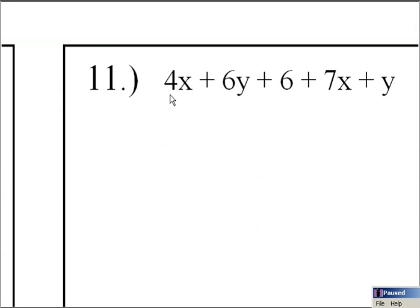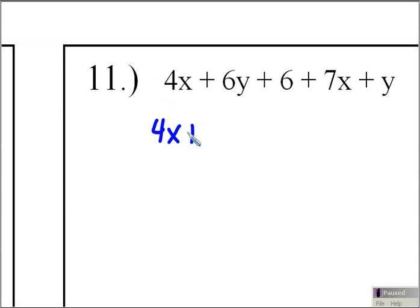Let's look at number 11. We're going to combine our like terms just like we did in problem number 8, so I'm going to combine all of my x's together, then all of my y's, and then all of my whole numbers. I'm going to take 4x — that's a positive 4x because there's no negative sign — so it's positive 4x, and then I'm going to combine it with the 7x. I can do this because of the commutative property, so I can change the order around.